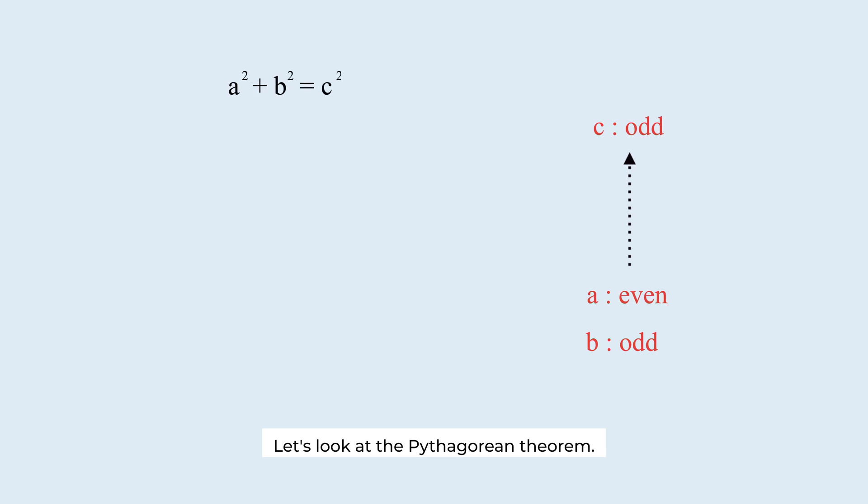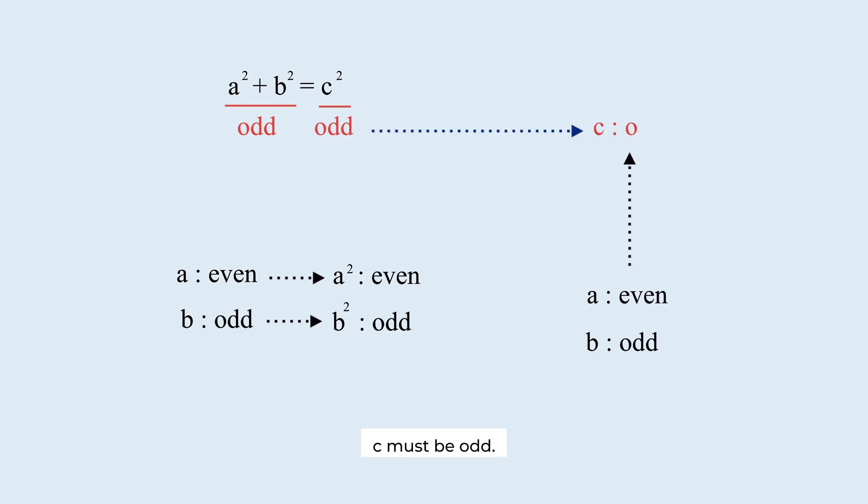This also implies that c is odd. Let's look at the Pythagorean theorem. Since a is even, a squared is even. Since b is odd, b squared is odd. So, a squared plus b squared is odd. Since the right side, c squared must be odd, c must be odd. Now, we know a is even, b is odd, c is odd.